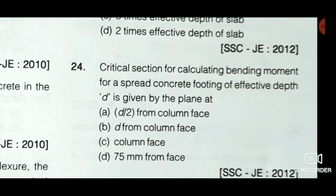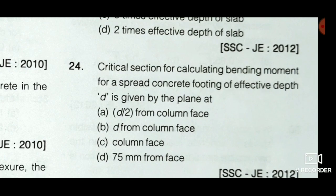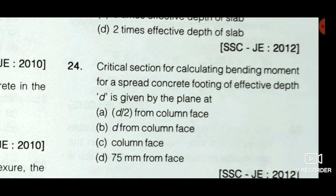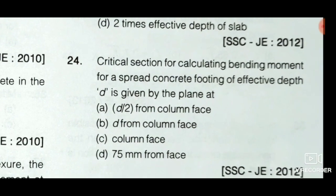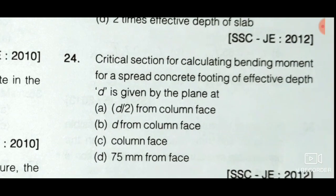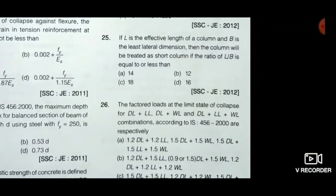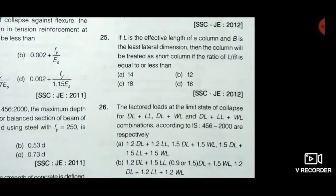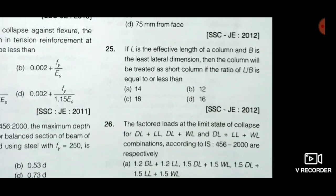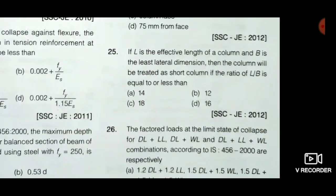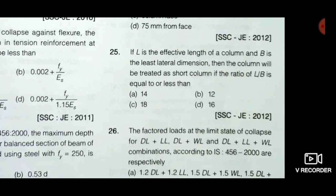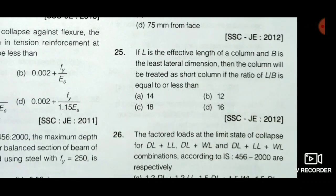Next question: Critical section for calculating bending moment for a spread concrete footing of effective depth d is given by the plane at — option C is the correct answer: column face. Next question: If l is the effective length of a column and b is the least lateral dimension, then the column will be treated as a short column if the ratio l/b is equal to or less than — option B is the correct answer: 12.